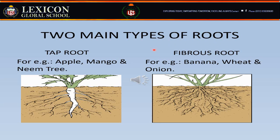Fibrous root is different from taproot. Here, instead of a single large root, several smaller roots branch out in different directions. For example, banana, wheat, and onion have fibrous roots.